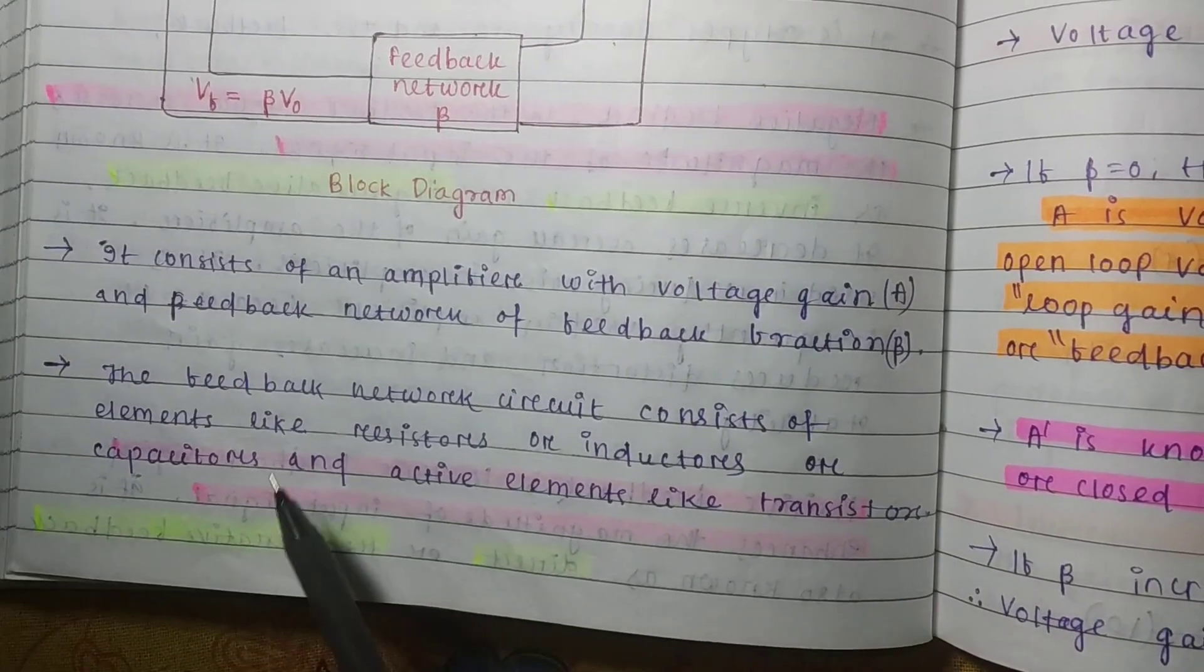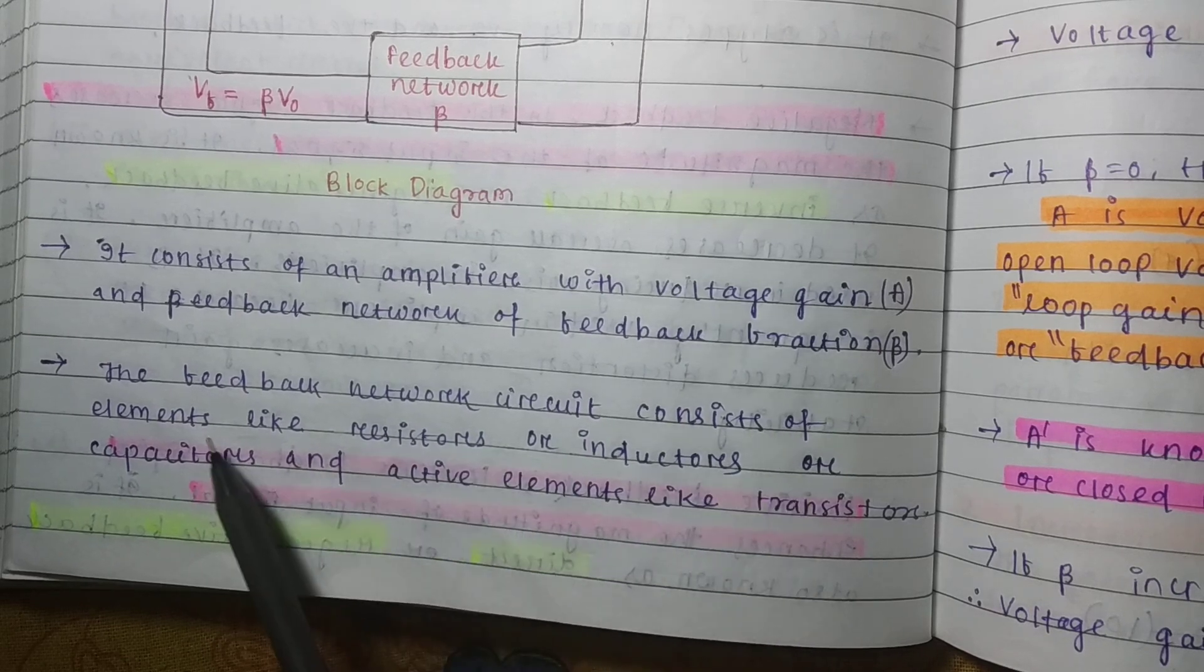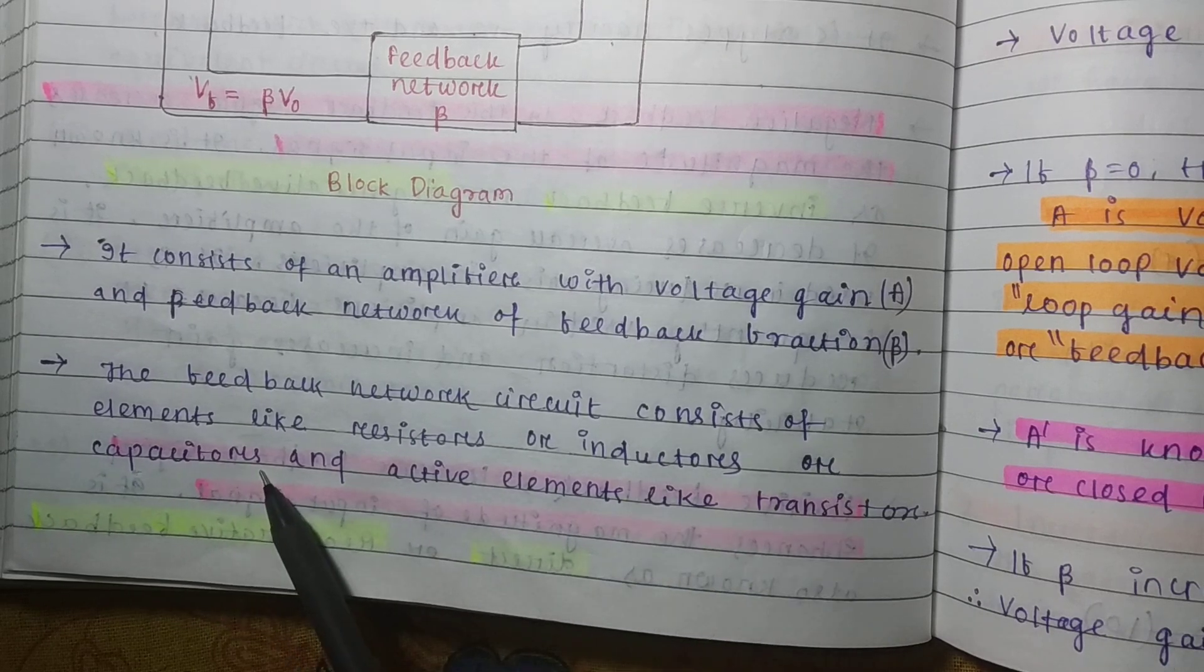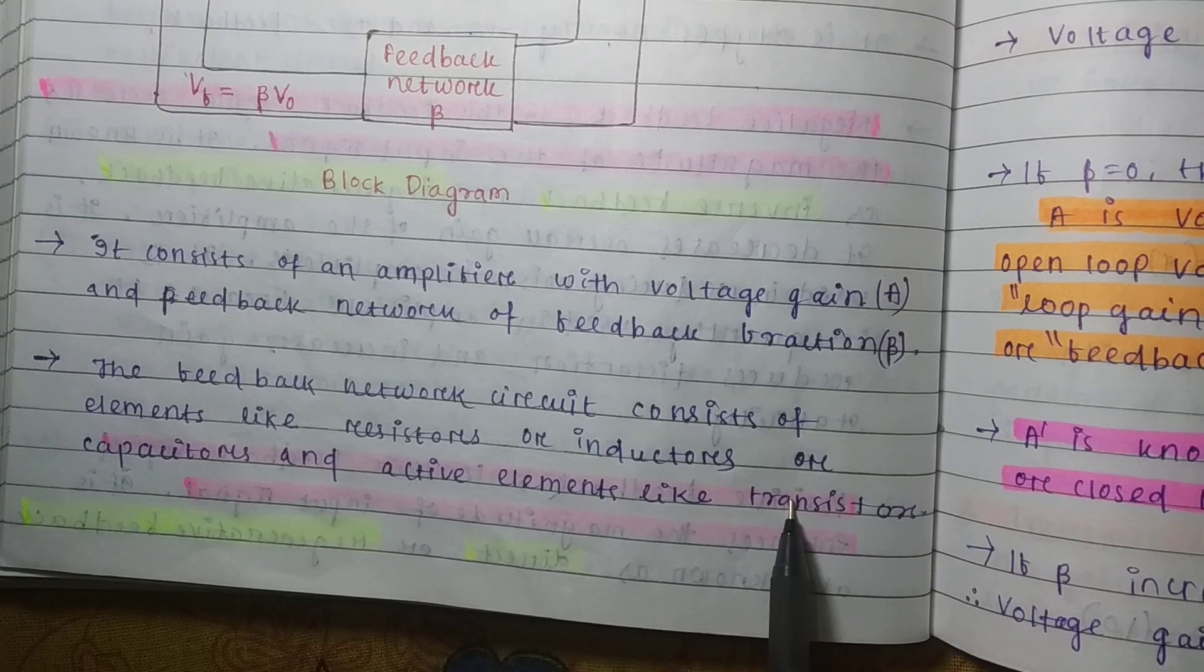The feedback network circuit consists of elements like resistors, inductors, or capacitors and active elements like transistors.